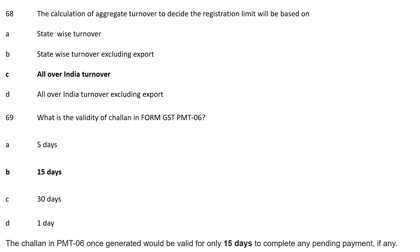Question 68: What is the validity of a challan in Form GST PMT 06? Option A: 5 days; Option B: 15 days; Option C: 30 days; Option D: 1 day. The correct answer is Option B, 15 days. The challan in PMT 06, once generated, is valid for only 15 days to complete any pending payment.